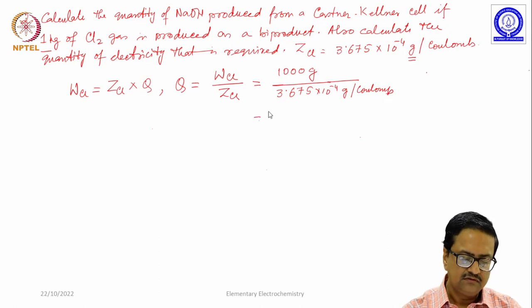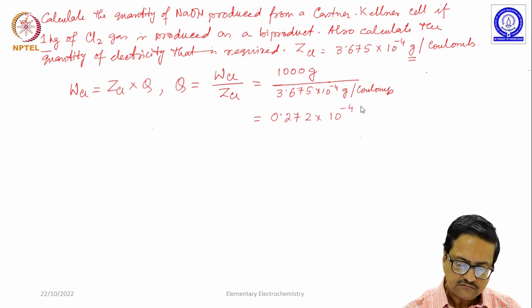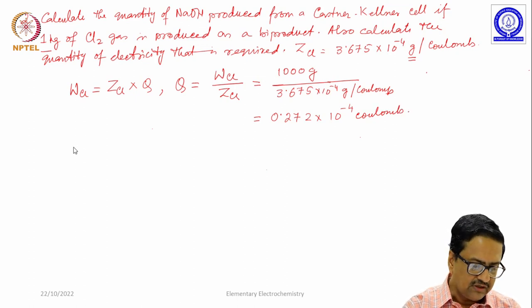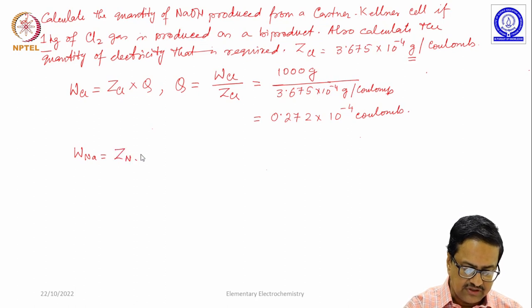This is equal to 0.272 × 10^7 coulomb. Then when we try to calculate the W_sodium it is nothing but z_sodium times Q.